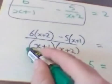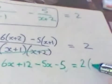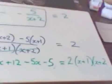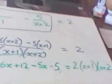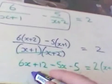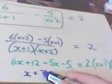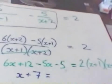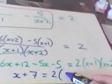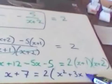The right hand side, I've multiplied everything by this (x+1)(x+2), so it gives me 2 lots of (x+1)(x+2). I now simplify as far as I can, so I've got 6x take 5x is x, 12 take 5 is 7. On the right hand side I've got 2 lots of (x²+3x+2).